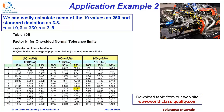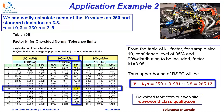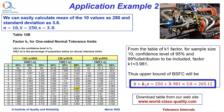We use the table of factor K1 for one-sided normal tolerance limits. The tables of tolerance factors can be downloaded from our website at www.world-class-quality.com. From the table of K1 factor, for a sample size of 10, confidence level of 95%, and 99% of the distribution to be included, factor K1 is found to be 3.981. Thus, the upper tolerance for BSFC will be X̄ + K1·S = 250 + 3.981 × 3.8, which works out to 265.12.